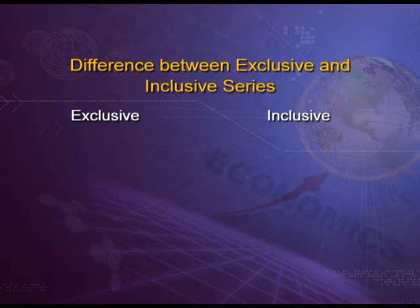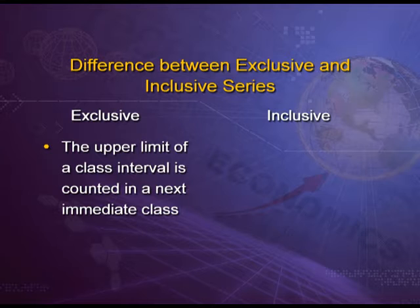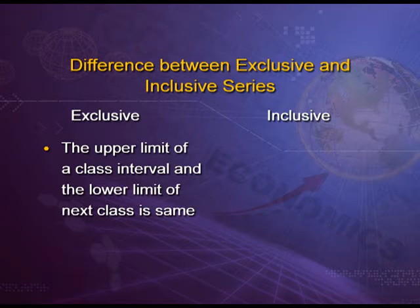In an exclusive series, the upper limit of a class interval is counted in the next immediate class. In an inclusive series, the upper limit of the class interval is counted in the same class. The second difference is the upper limit of a class interval and the lower limit of the next class interval is the same — for example, 5 to 10, 10 to 15, 15 to 20 and so on.